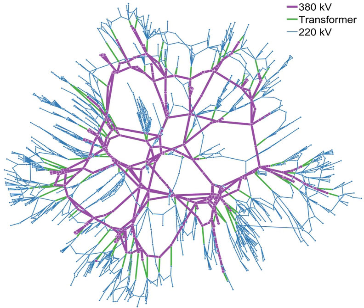Grids are designed to supply voltages at largely constant amplitudes. This has to be achieved with varying demand, variable reactive loads, and even nonlinear loads, with electricity provided by generators and distribution and transmission equipment that are not perfectly reliable. Often grids use tap changes on transformers near to the consumers to adjust the voltage and keep it within specification.